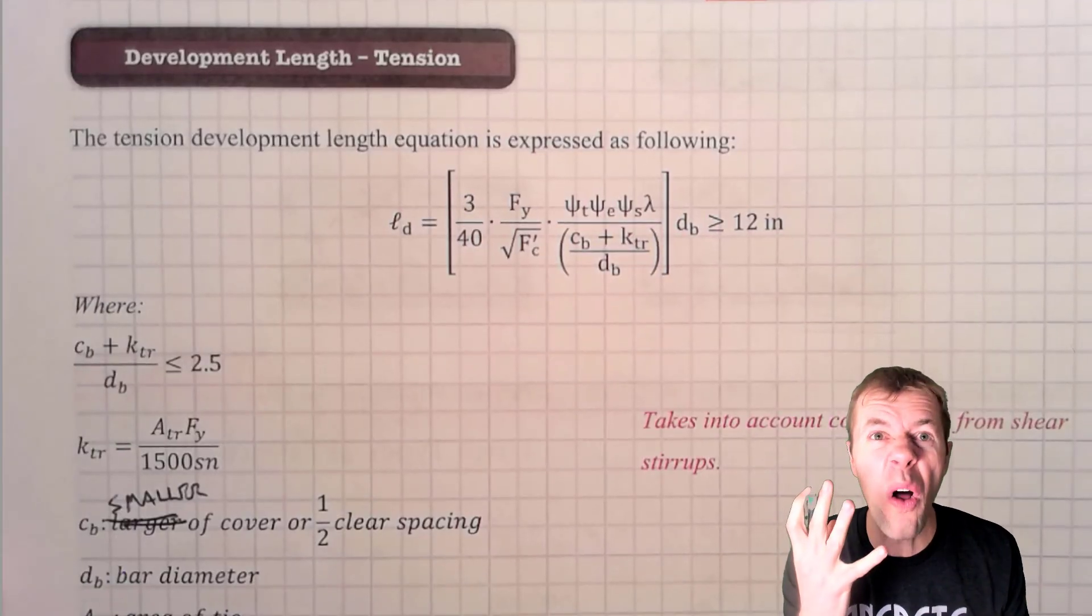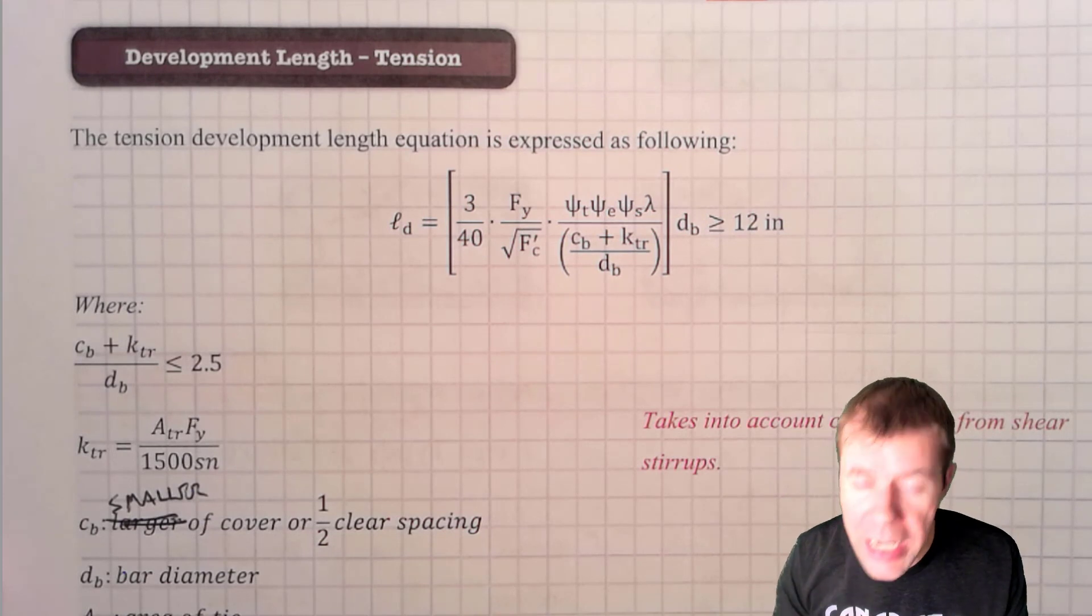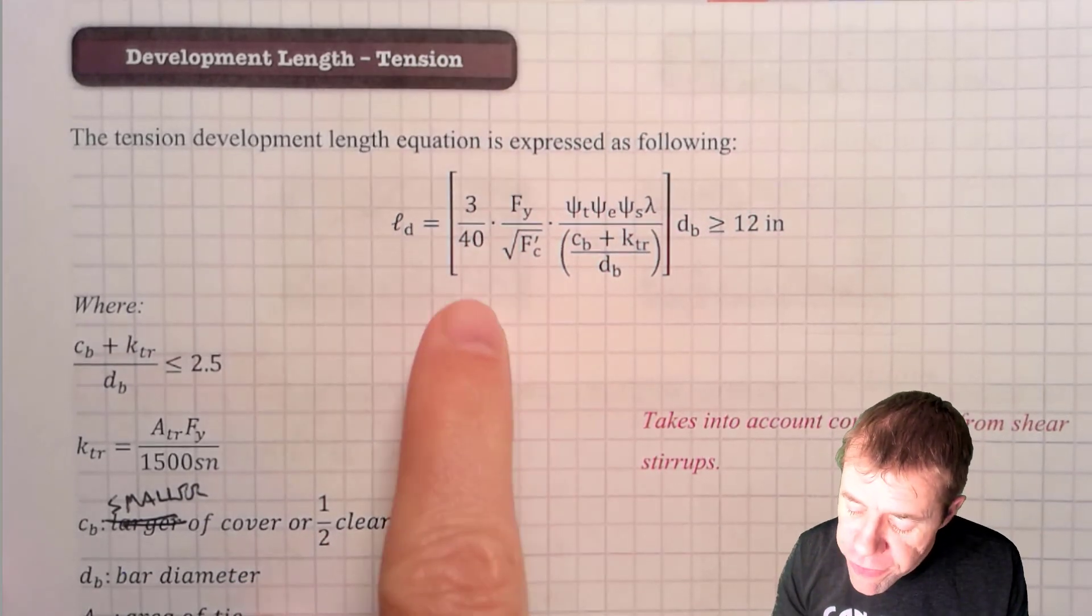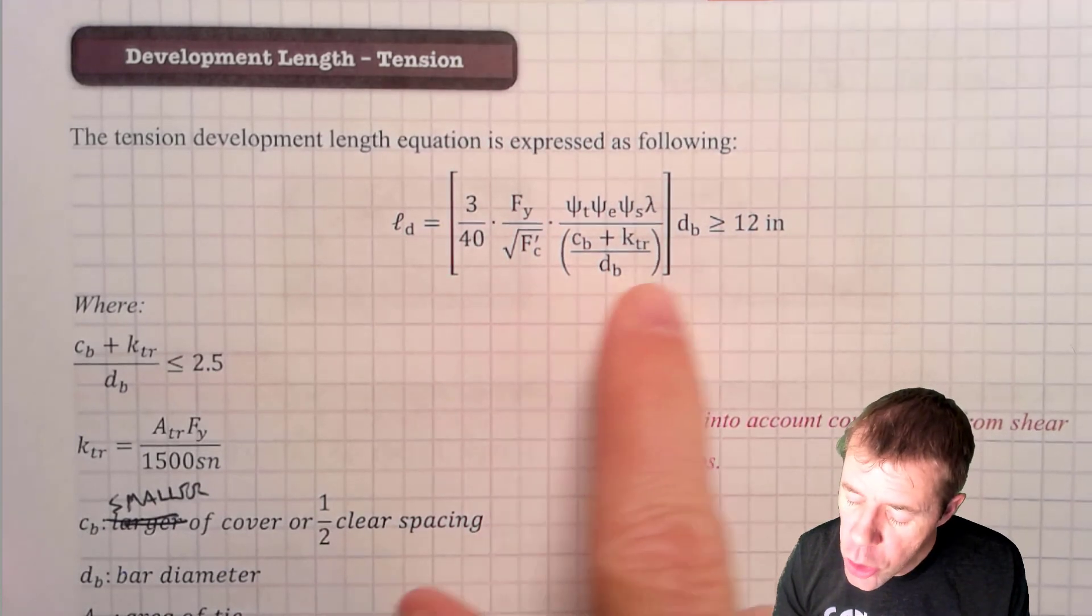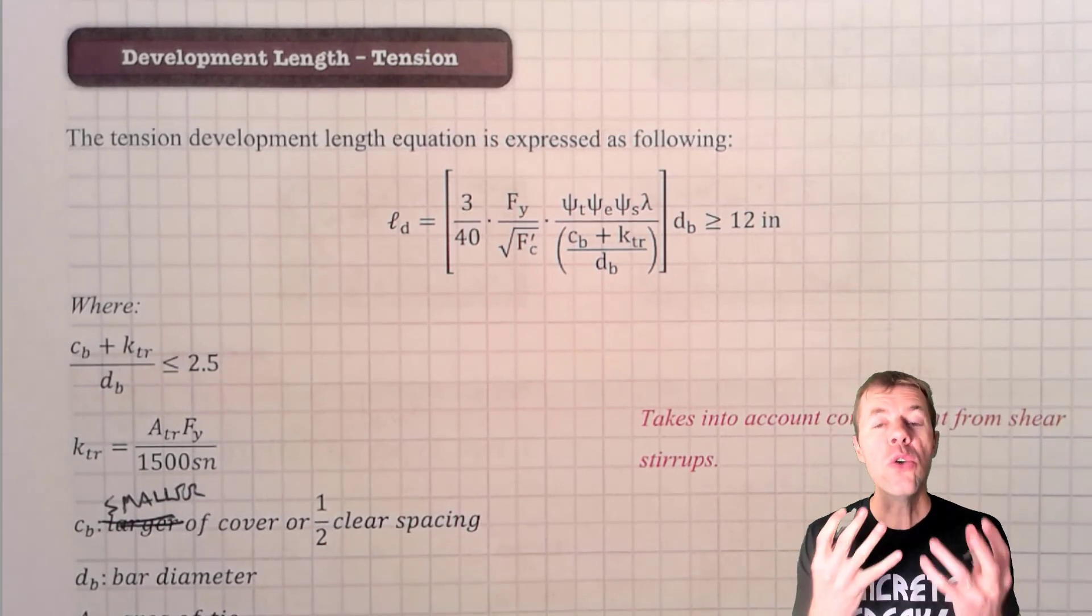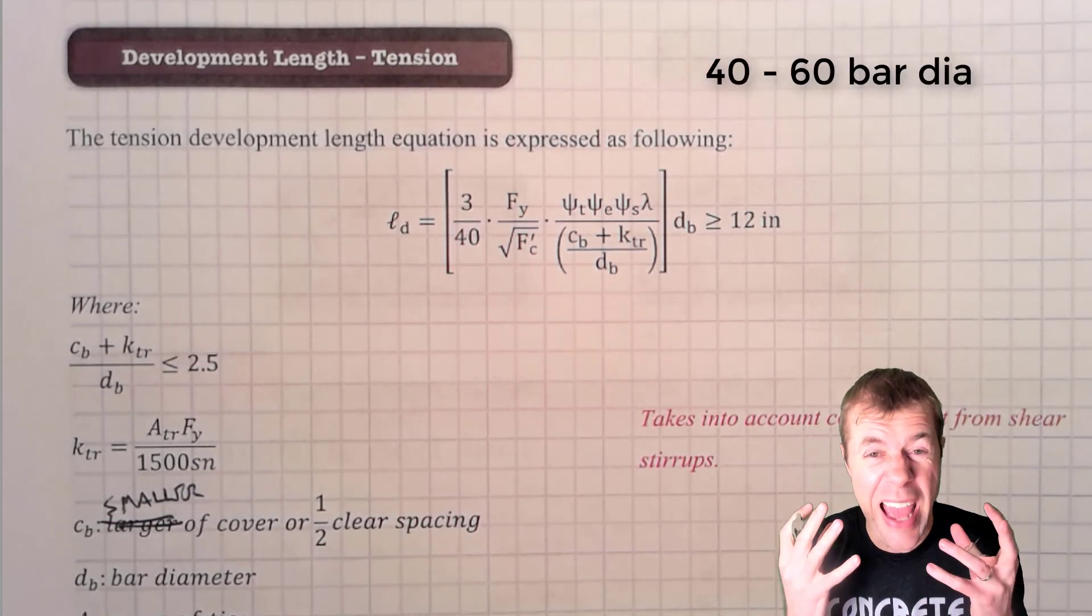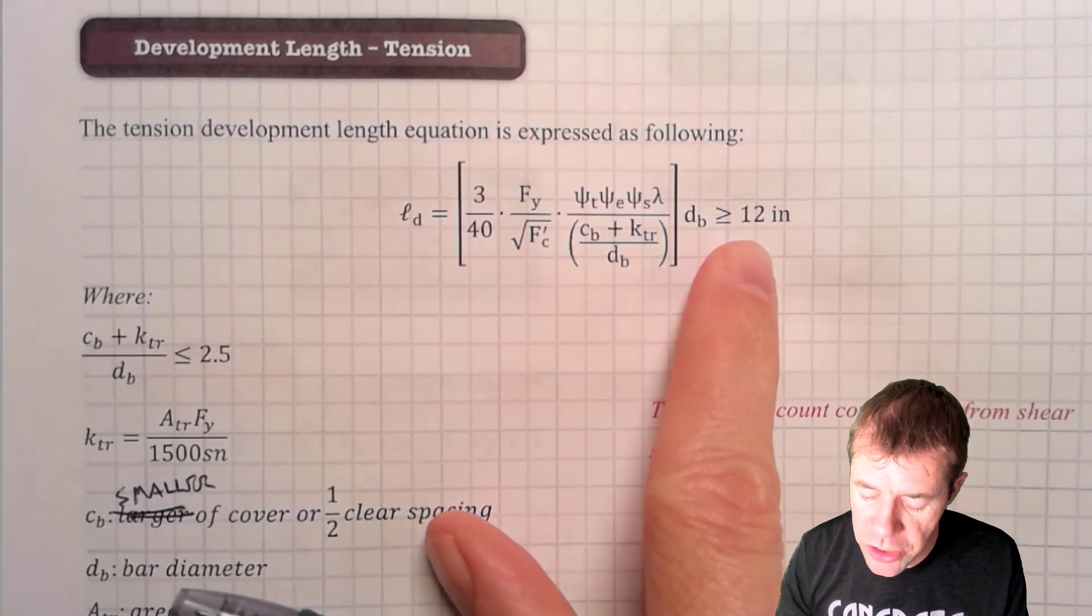ACI has taken all of this and put it into one equation. It's right here. It's got all these factors in it that multiply to give a number that's multiplied by the bar diameter that gives you the development length. Usually this number is between 40 and 60 bar diameters. But it has to be also greater than 12 inches.